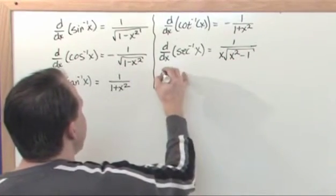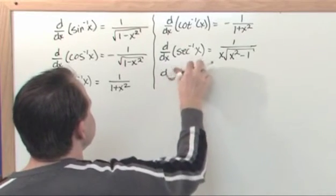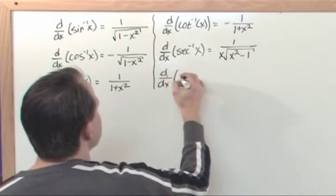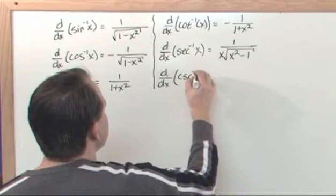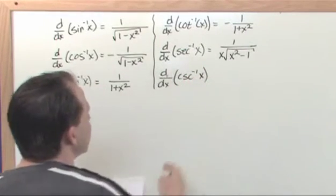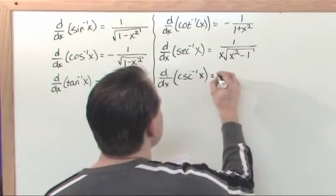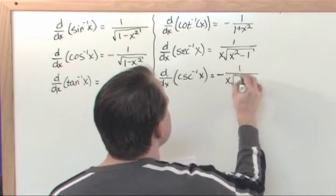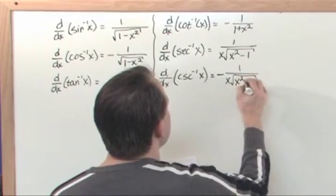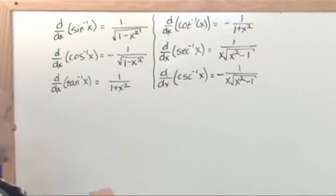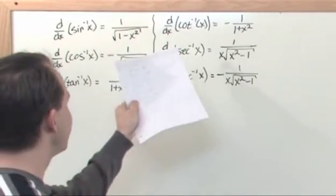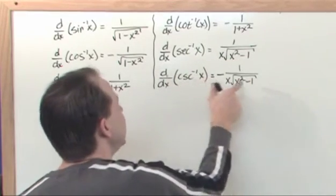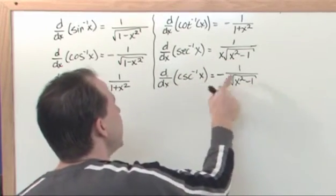The derivative of the inverse secant function is equal to one over x times the square root of x squared minus one. And by now you can see the pattern — the derivative of the inverse cosecant function is equal to negative one over x times the square root of x squared minus one. So again, the derivative of the inverse secant gives you something, and the derivative of the inverse cosecant gives you the same thing with a negative sign.